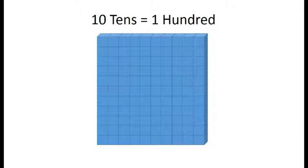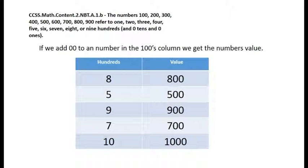The numbers 100, 200, 300, 400, and so on refer to 1, 2, 3, and 4 in the hundreds column with zero tens and zero ones. If we add two zeros to any number in the hundreds column, we can get its value.